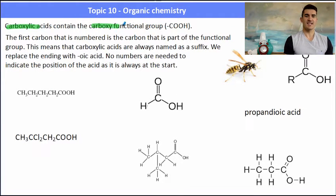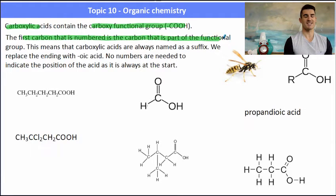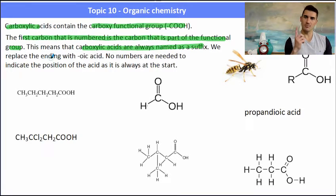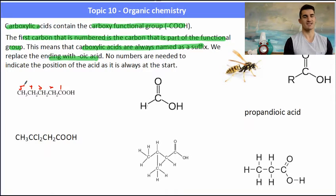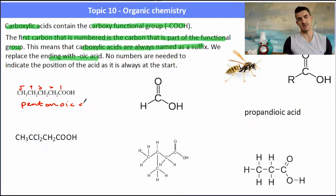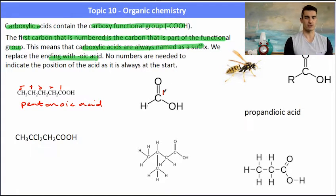Carboxylic acids contain the carboxy or carboxyl functional group, which is the COOH. The carbon that is connected — that will be the number one carbon in the chain. Carboxylic acids are always named as a suffix where we replace the last part of the name with '-oic acid'. In the first example we have five carbons in a row — five carbons is 'pent' — so we would change the name to pentanoic acid. The number one carbon is the first carbon with the carbonyl functional group.